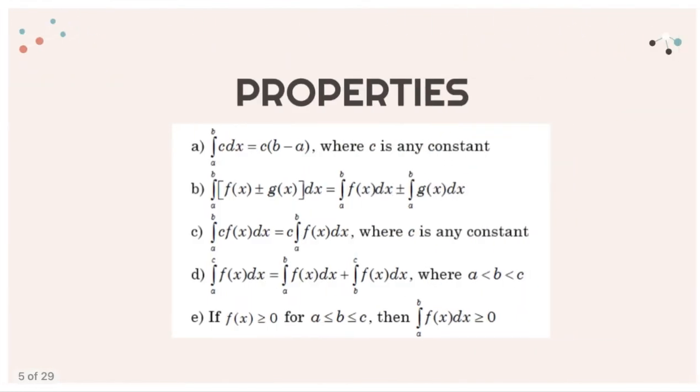Next are the properties of definite integral. We have five properties listed here. For the first one, if we integrate c dx from a to b, it is equal to c(b-a), where c is any constant. For property b, if we add or subtract two functions with the same limit, we can separate it.